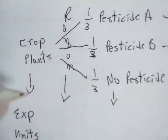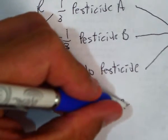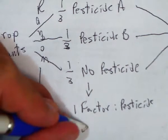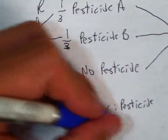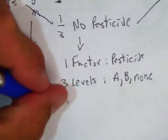What do we have here? We have one factor: pesticide. We have three levels: A, B, or none. And there are three treatments.